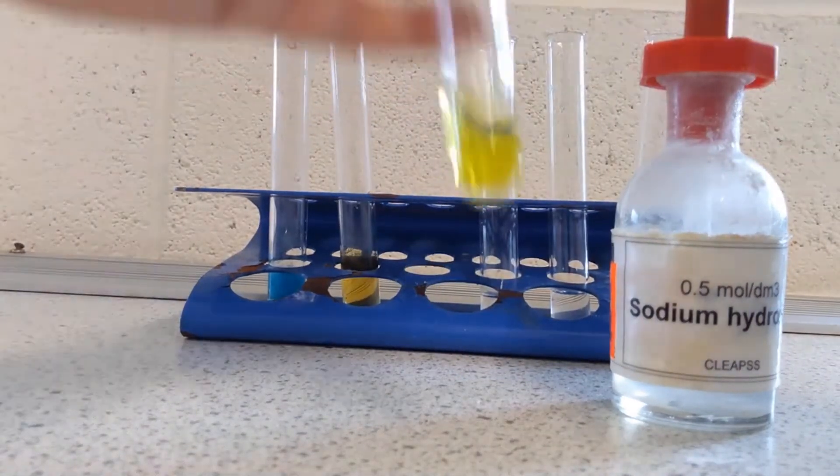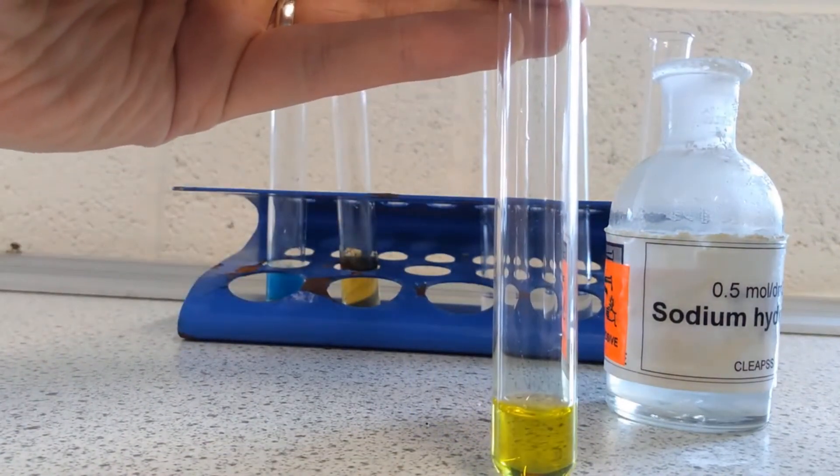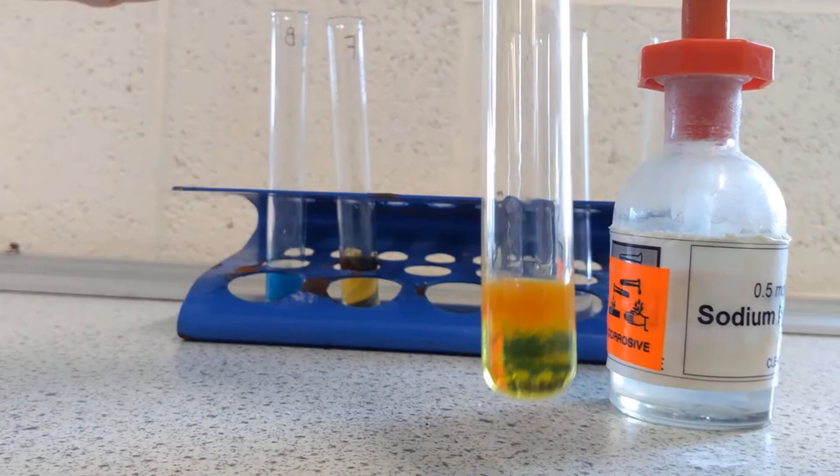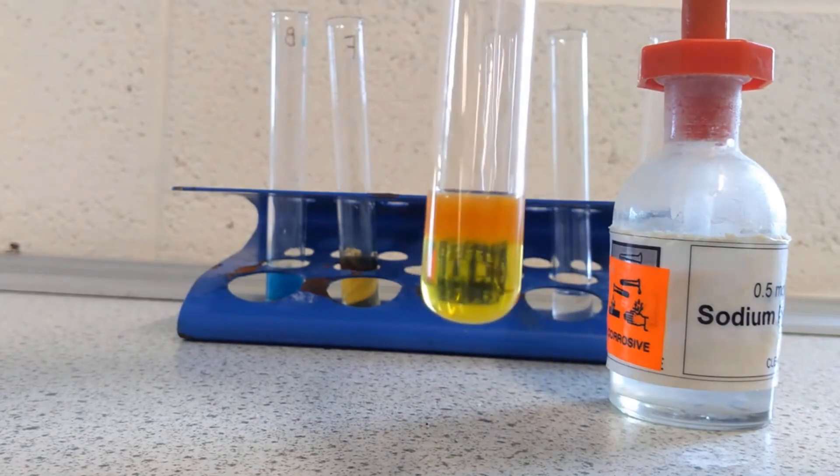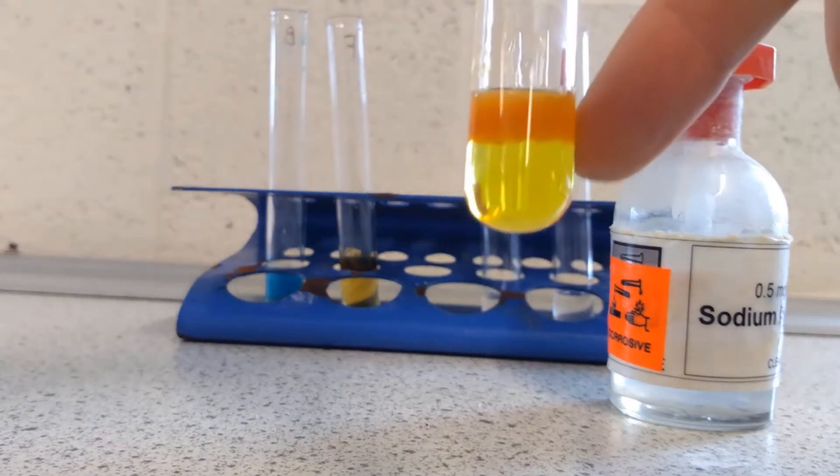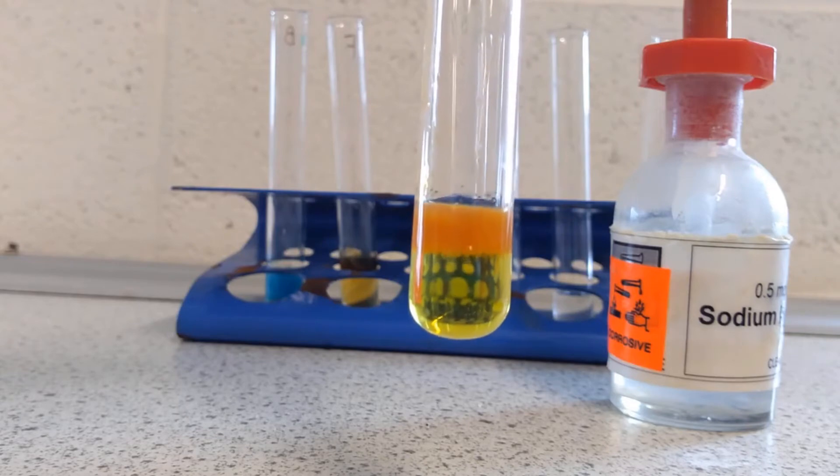And then in contrast to that, iron 3 plus ions produce a much more orangier colour. So if you think about rust, that's hydrated iron oxide and it's iron 3 oxide, so this is rusty coloured because that's the colour we would expect all iron 3 compounds to turn.